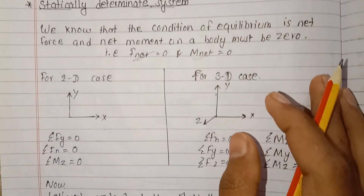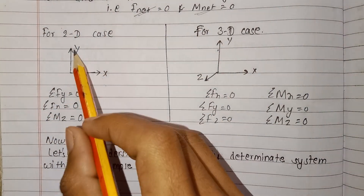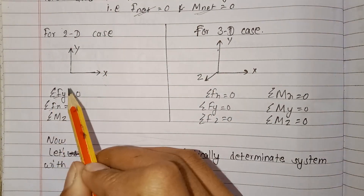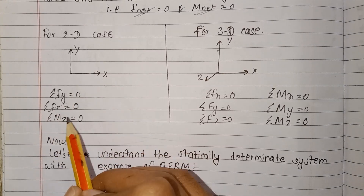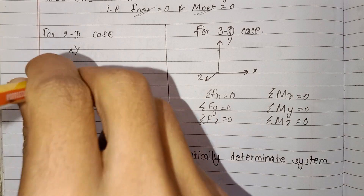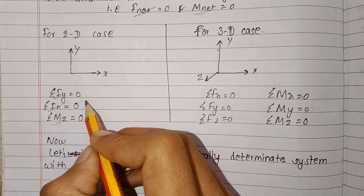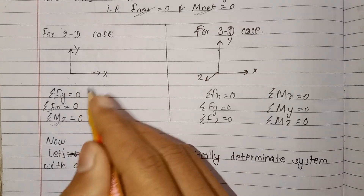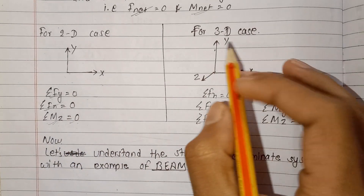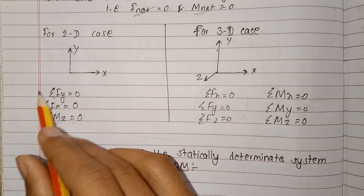For a simple case in two-dimensional problems, as studied in Applied Mechanics in the second semester, the equilibrium conditions are: summation of Fy equals zero, summation of Fx equals zero, and summation of moment about the z-axis equals zero. When these equilibrium conditions are satisfied, the body is in equilibrium.